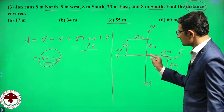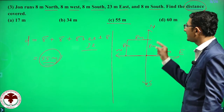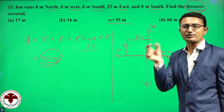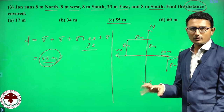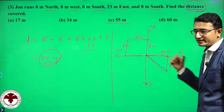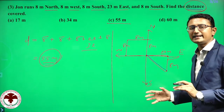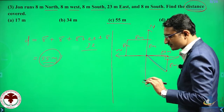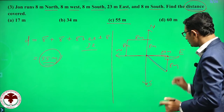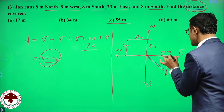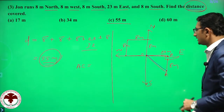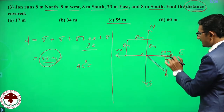The initial position is point A and the final position is point F. For displacement, we only care about the initial and final positions — what happens in between does not matter. Looking at the diagram, we have a right angle triangle. In physics, when there is a right angle triangle, we apply the Pythagoras theorem: AC² equals AB² plus BC².